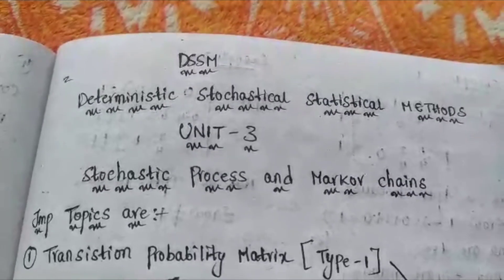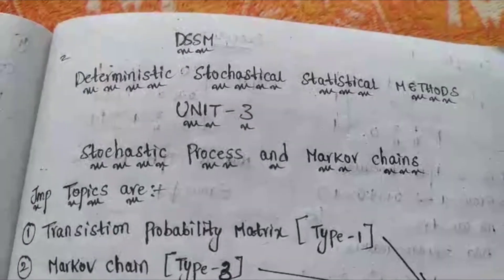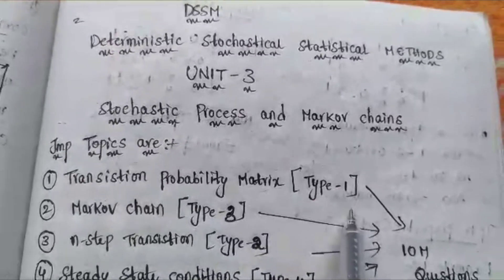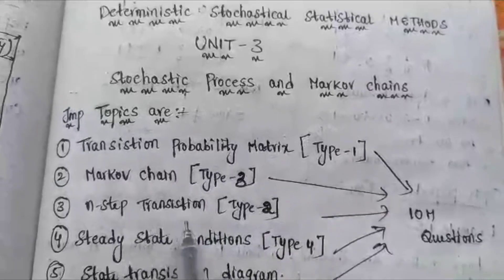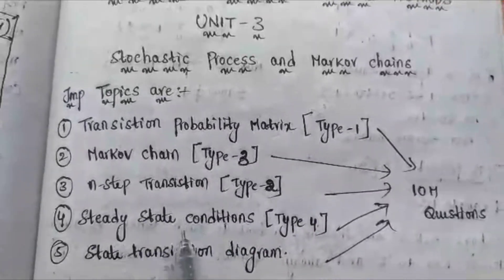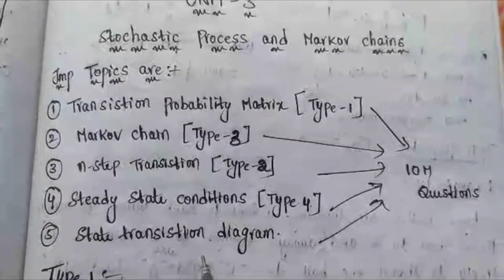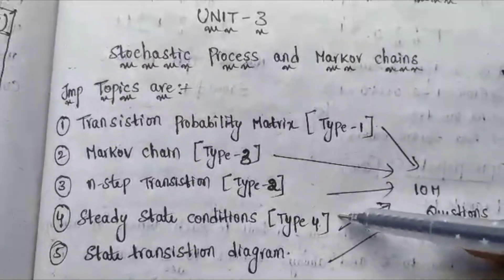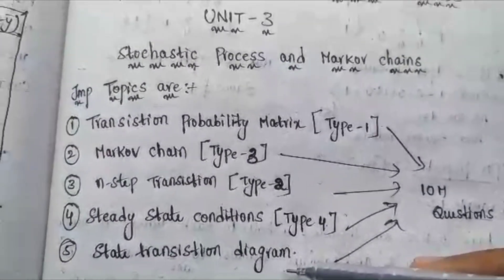This is the third unit of the DSSM subject: Stochastic Process and Markov Chains. The important topics are the Transition Probability Matrix, which is a type 1 model; Markov Chain, which is a type 3 model; n-step transition, which is a type 2 model; steady state condition, which is a type 4 model; and the state transition diagram. Types 1 through 4 are the main problem types, and some basic problems from these are common in exams.